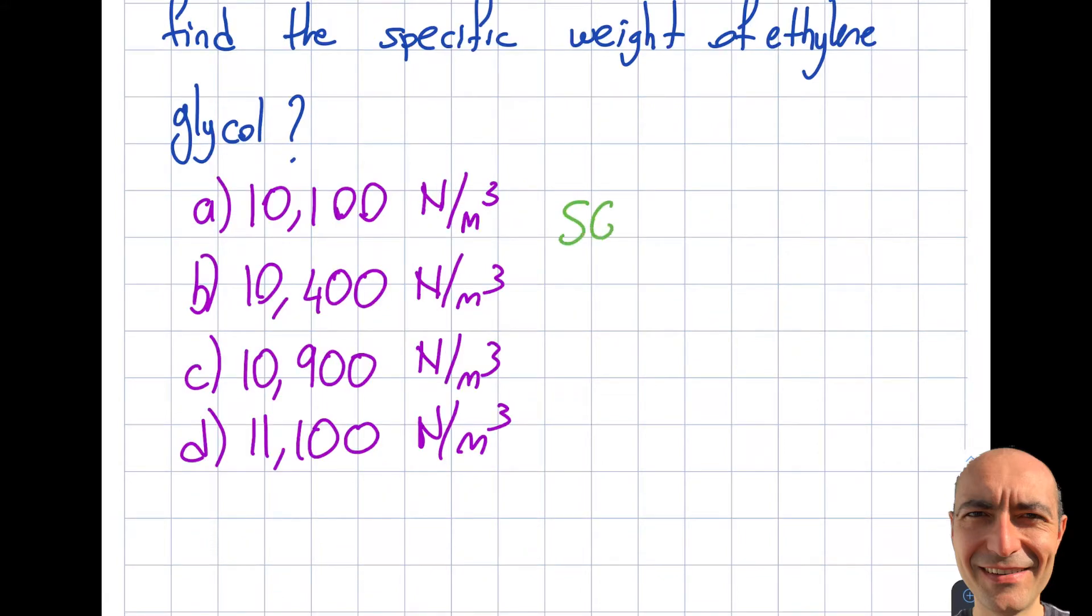Specific gravity is given as basically 1.055, right? So that will be the density of mixture divided by density of water at 4 degrees C, coming from page 176 of the reference manual.